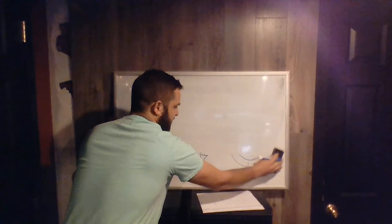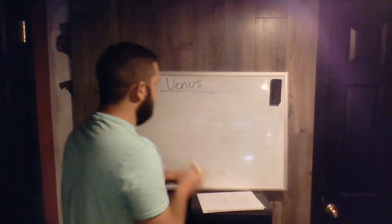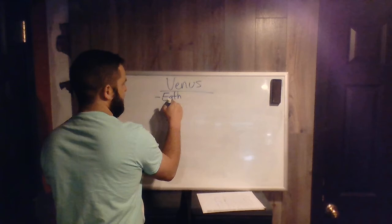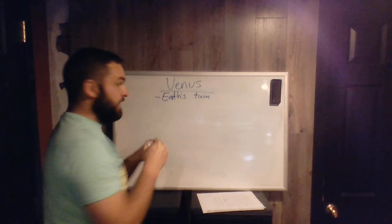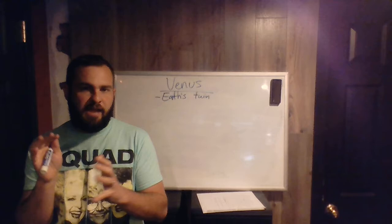Venus is kind of a cool planet. Venus is the second planet from the Sun in our solar system, and it's known as Earth's twin. That's because, as we know in class, Venus is pretty much the same size as Earth. It's got a pretty similar diameter and similar size. It's got an atmosphere.